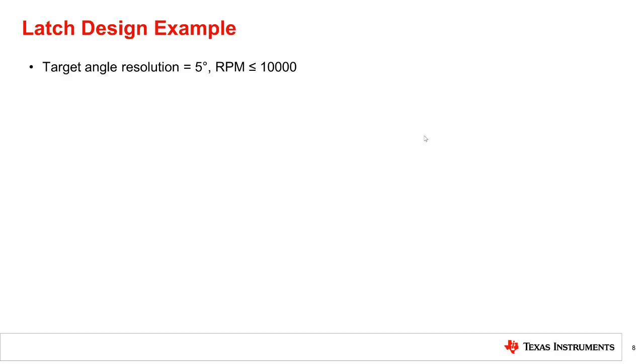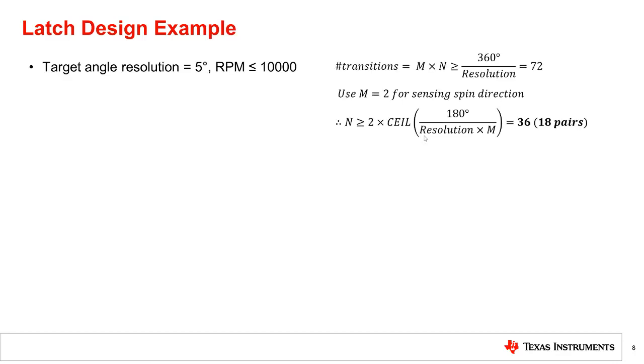We can now look at an example where the design calls for a target angle resolution of 5 degrees and a 10,000 RPM maximum angular velocity. The goal is to select the number of poles, the number of latch sensors, and the required sensor sampling rate. Applying equation 3a reveals that at least 72 transitions are required in all to achieve a 5 degree minimum angle resolution. If we use two sensors to support shaft direction, then the magnet must have at least 36 poles or 18 pole pairs.